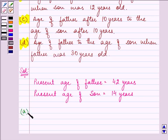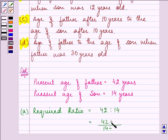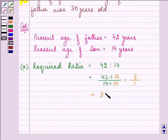Now, for the first part, we need to find out the ratio of present age of father to present age of son. So, the required ratio is 42 is to 14. That can be written as dividing it by the HCF and that is 14. So, the answer is 3 is to 1.